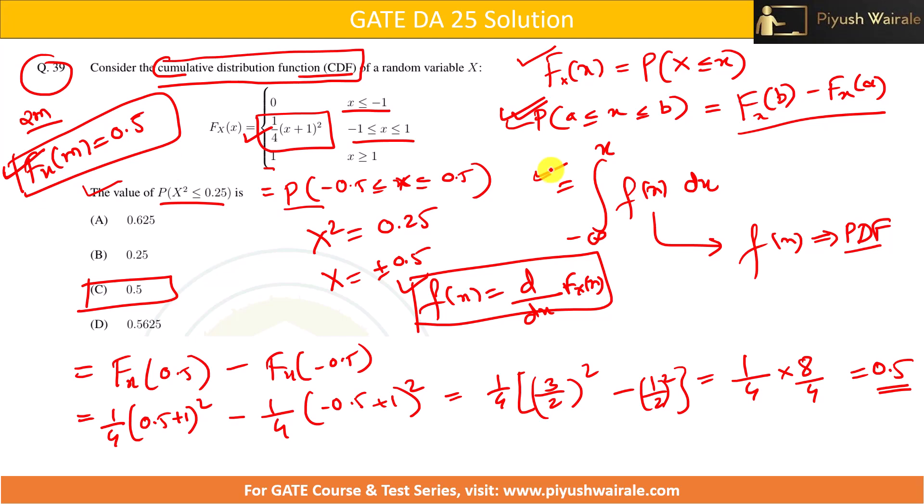Even if you try to differentiate this one F(x) for getting a PDF, what we are going to get? 1/2(x + 1). Now just integrate here between -0.5 to 0.5. Anyway we are going to get the same answer here. So either we follow this approach or first convert to PDF and then use this thing. Anyway we are going to get the same answer here.